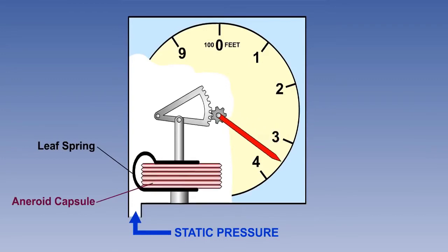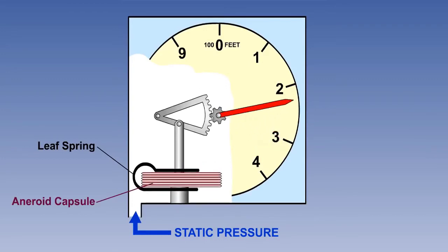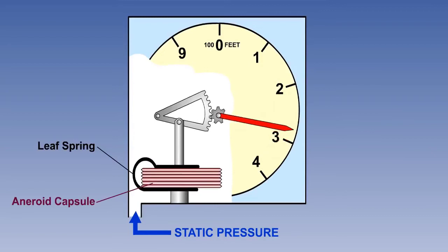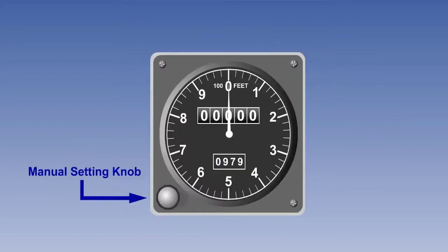We can see the principle of the linkage mechanism in operation, although the actual arrangement is much more complex. The simple altimeter has a manual setting knob, which is geared to the pointer. If this knob is used to set zero on the ground, we call the altimeter setting QFE, and we say that the altimeter indicates height. If we set the airfield distance above sea level when on the ground, we call the pressure setting QNH, and the altimeter indicates altitude. These terms will be explained in more detail in the next lesson.